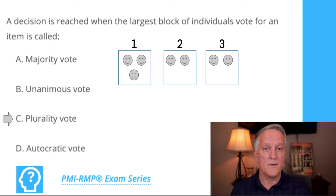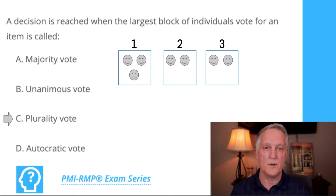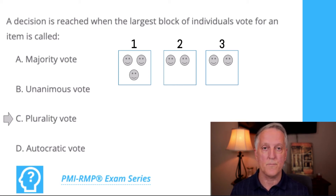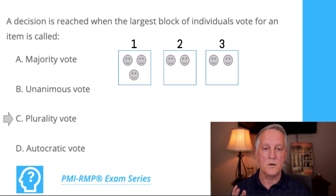We do not have a unanimous vote because everyone did not vote for one particular item. Neither do we have a majority vote — that would require 50% or more, meaning four or more people would have to vote for a particular option. But we do have what is called a plurality vote: the largest block of individuals voting for one particular item.